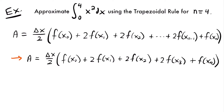Now we need to figure out delta x, the width of our trapezoids, and what these x values will be. Delta x equals b minus a divided by n, where a and b are the bounds of integration. We are integrating from 0 to 4, so b is 4 and a is 0, and n is 4 because we're using 4 trapezoids. So delta x equals 4 minus 0 divided by 4, which equals 1.